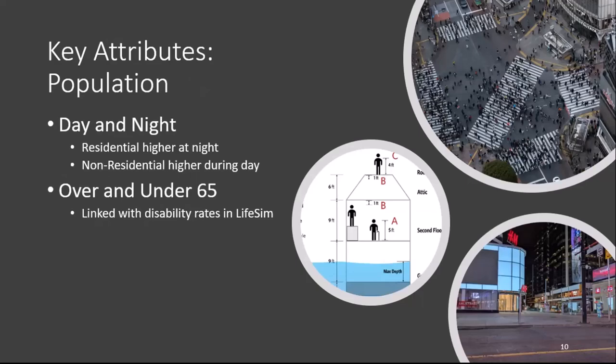For a life loss study, population — not structure values — is your main field of interest, and it's stored as an attribute within your structure inventory. You need to know how many people are there and the day/night breakdown, since people are more at home at night and at workplaces during the day. We're also interested in the age of the population because disability rates are highly correlated with age — older people are less able to vertically evacuate. The NSI breaks this into four groups: 2 PM over 65, 2 AM over 65, 2 PM under 65, and 2 AM under 65, so LIFESIM can assign population to different fatality rates depending on flood exposure.